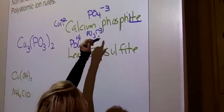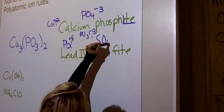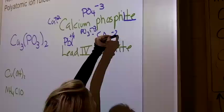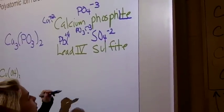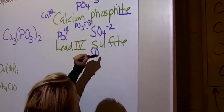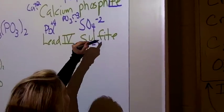Sulfate is SO4^2-. But you want one less oxygen, which would be SO3^2-. That's ite.